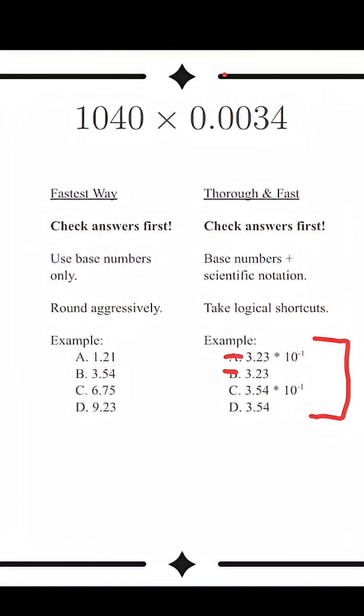we can eliminate A and B immediately since 3.4 times a number bigger than 1 will always be greater than 3.4.